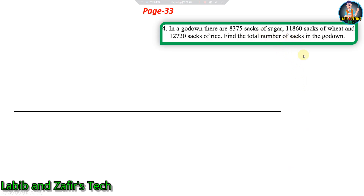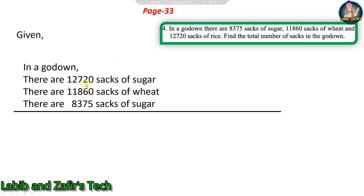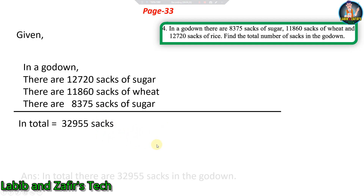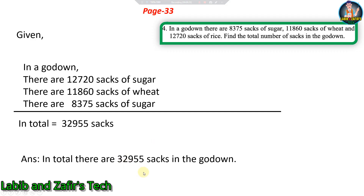Next problem: In a godown there are eight thousand three hundred seventy-five sacks of rice, eleven thousand eight hundred sixty-six sacks of wheat, and twelve thousand seven hundred twenty sacks of sugar. Find the total number of sacks in the godown. Adding all three: the total is thirty-two thousand nine hundred fifty-five sacks. Answer: there are thirty-two thousand nine hundred fifty-five sacks in the godown.